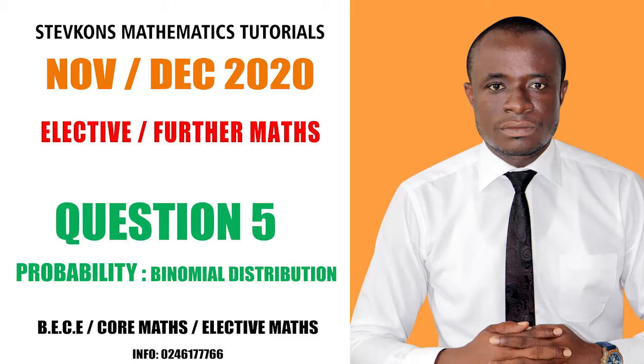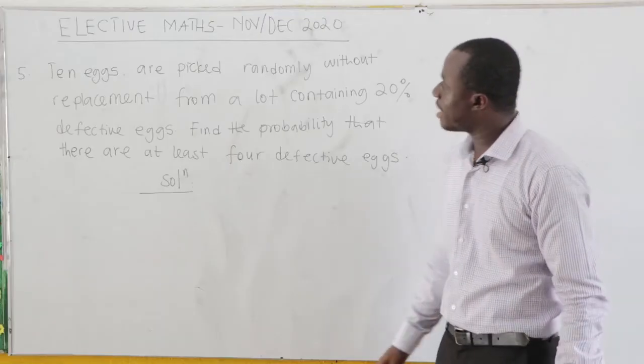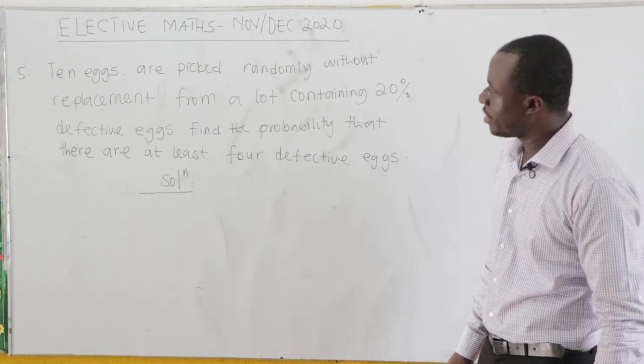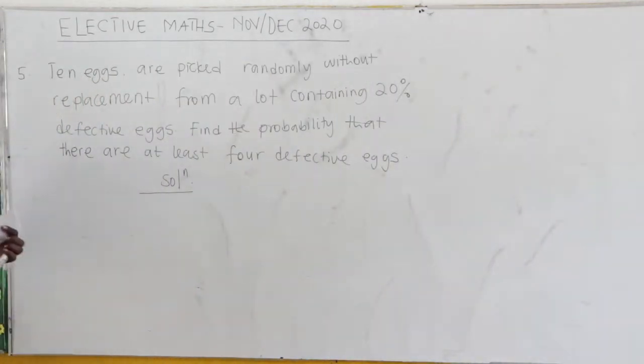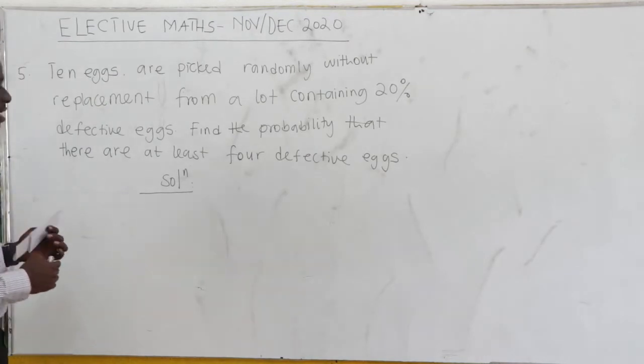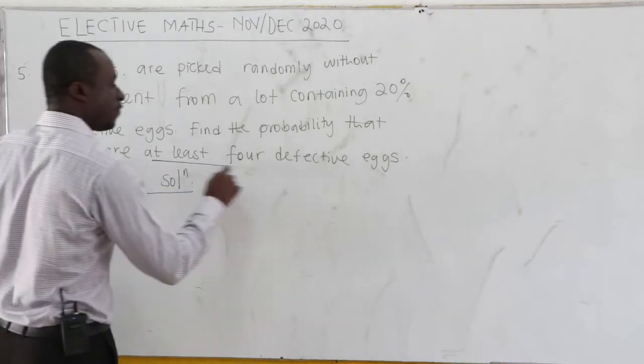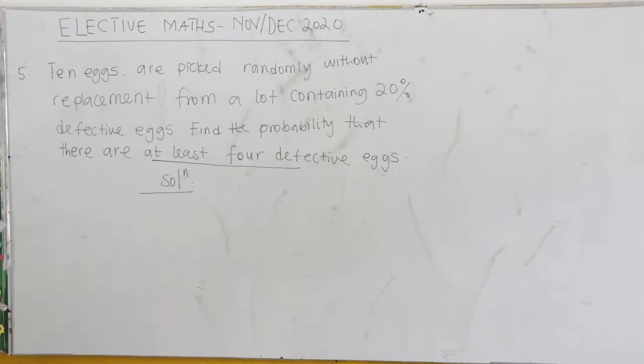November-December 2020, question number 5. Ten eggs are picked randomly without replacement from a lot containing 20% defective eggs. Find the probability that there are at least 4 defective eggs.